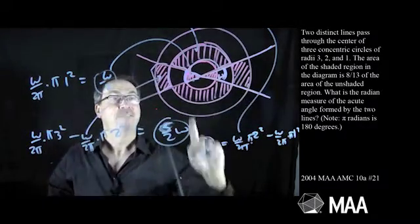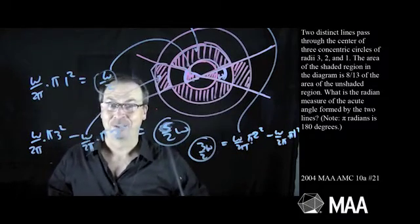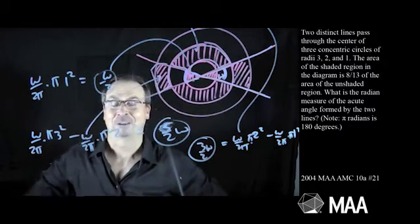In fact, I invite you to do it. Find a formula for the unshaded area, write them as a ratio of 8/13, solve the equation you get, and then let's compare answers with the essay that goes through this video.